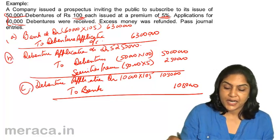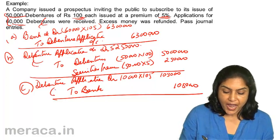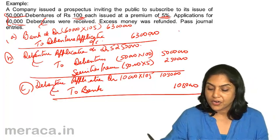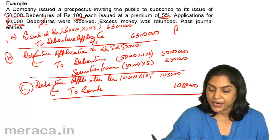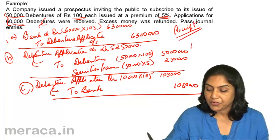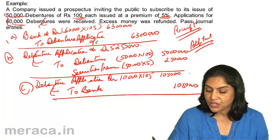So the three entries are: first entry on receipt of money, second on allotment of debentures, and the last one on refund.